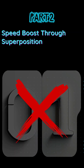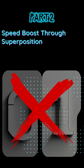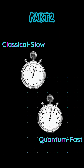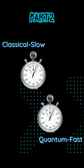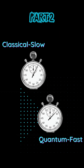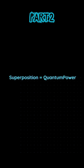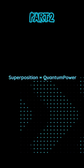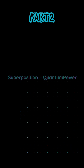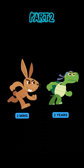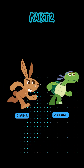So no, a qubit isn't magically zero and one at the same time. But it lets us work with a bunch of possibilities at once and guide the system toward the right answer — faster. That's called superposition, and it's one big reason why quantum computers could someday crack passwords way faster than classical ones.